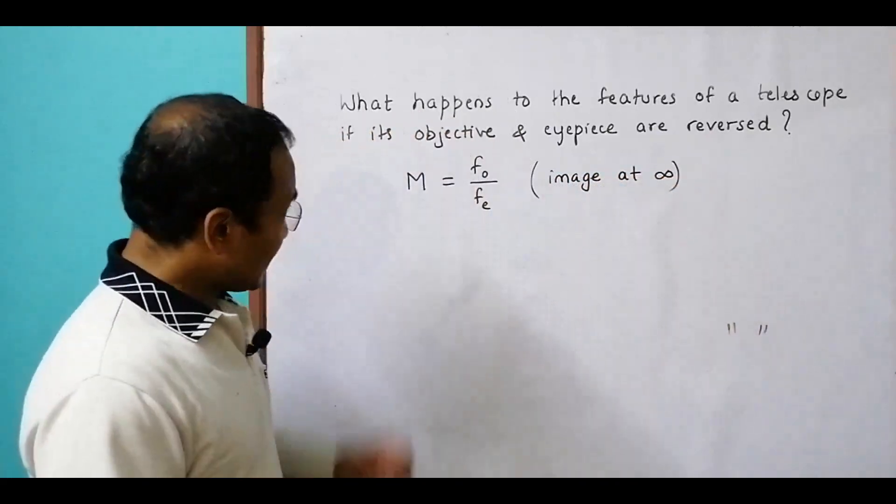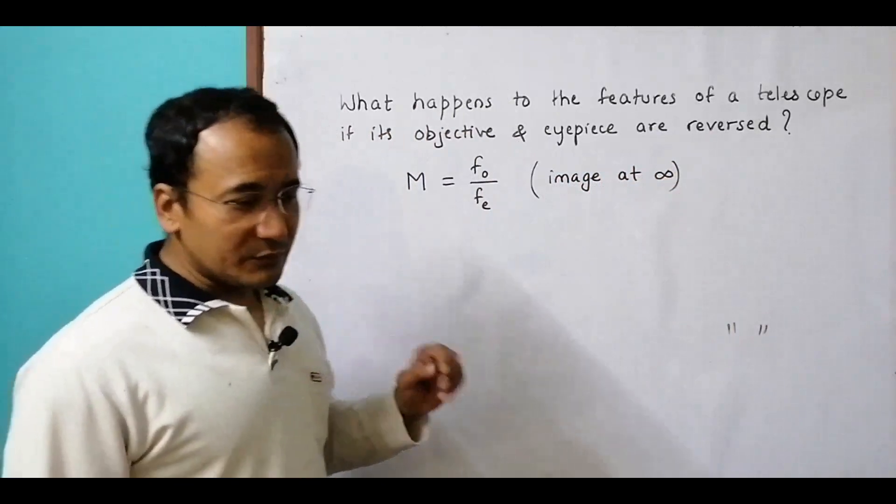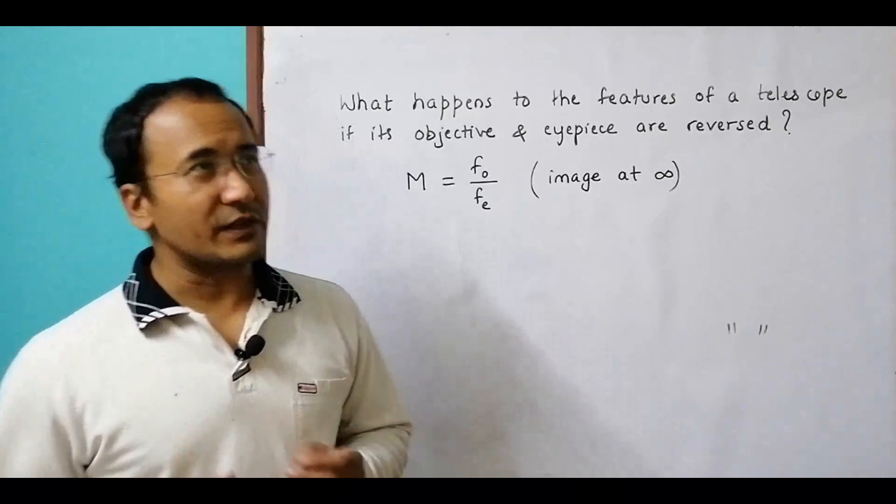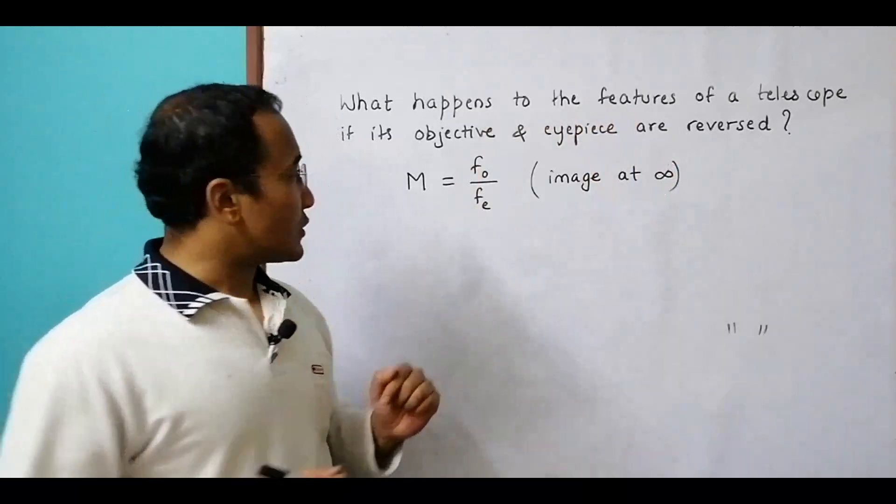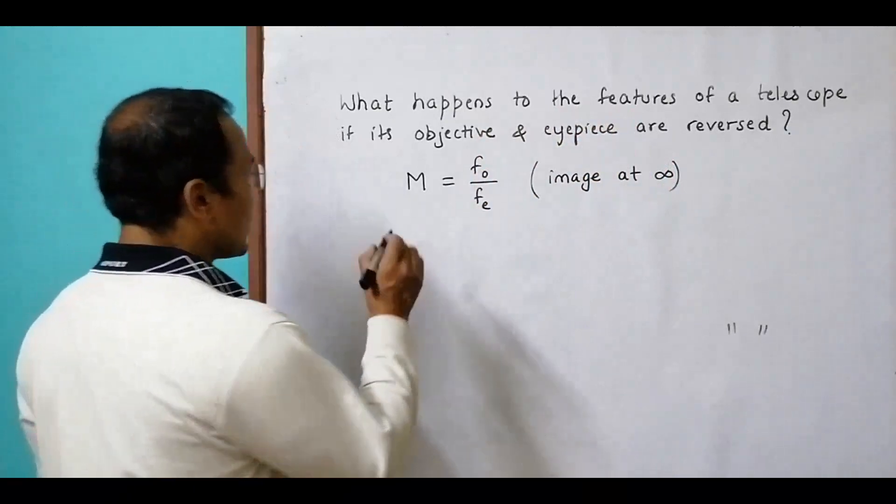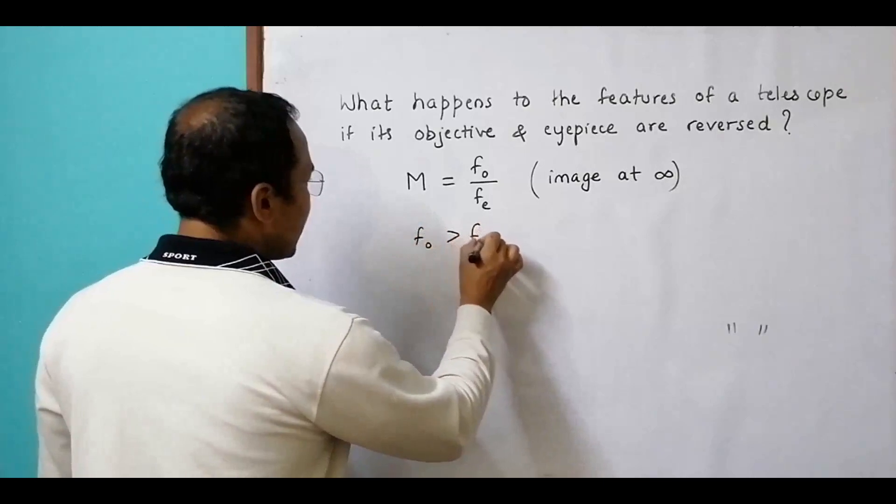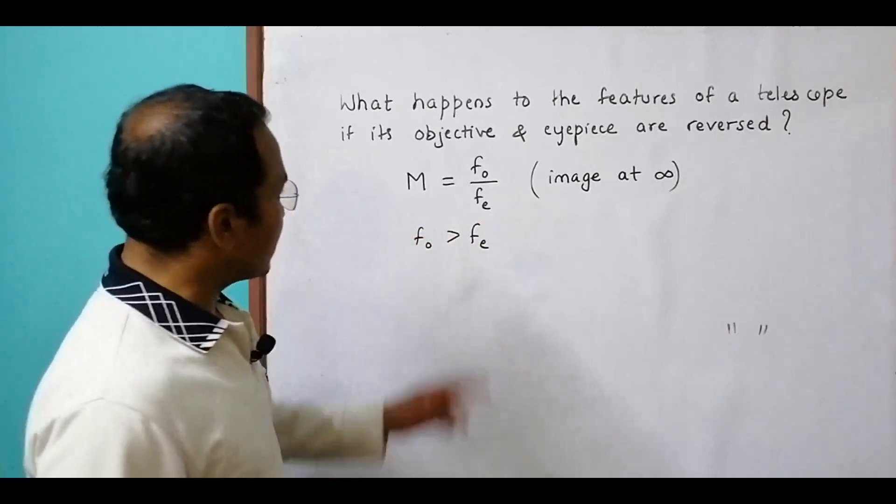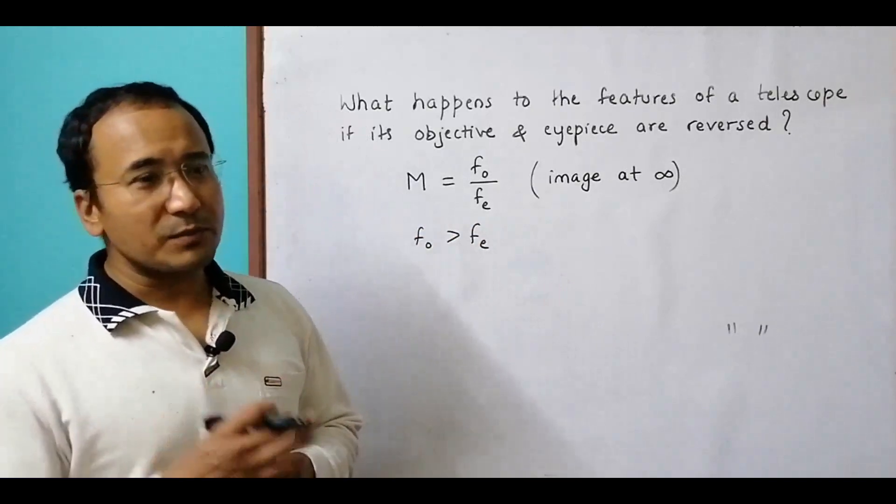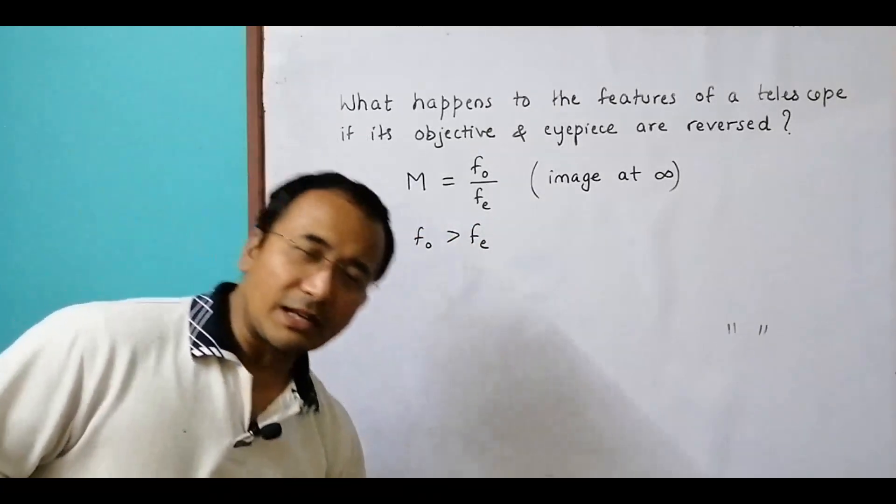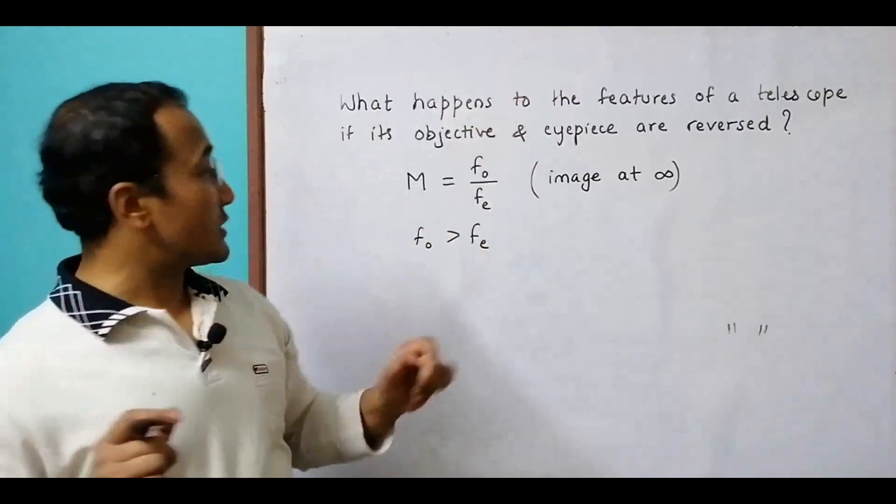In order to have high magnification, the visual angle is more and the object appears much nearer. That's why we choose fo more than fe. This is evident from the telescopes used by Galileo many years back. One telescope used to be very long because fo has to be very large and fe has to be very short.